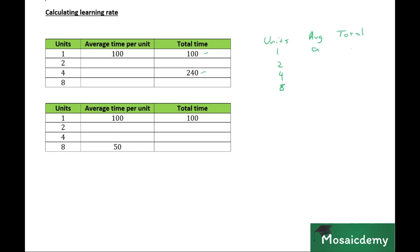If the time for the first unit is A for average time, every time we move down a row, we multiply the previous value by R. So AR, AR squared, and AR cubed. Likewise, every time for the total time, we simply multiply units by the average time. So A into one is A, two AR, four AR squared, and eight AR cubed.